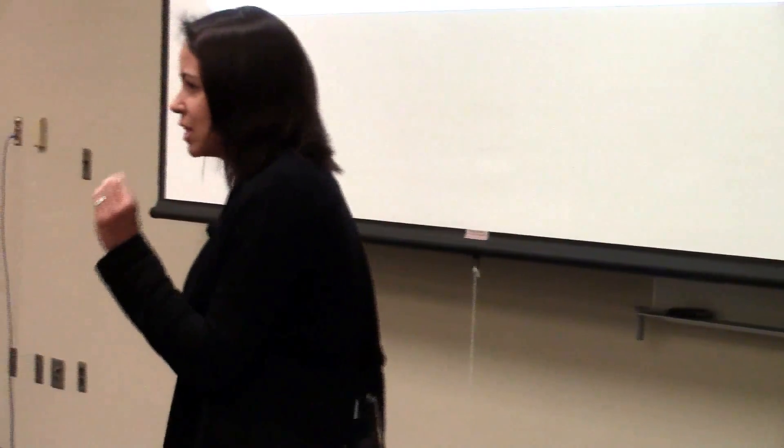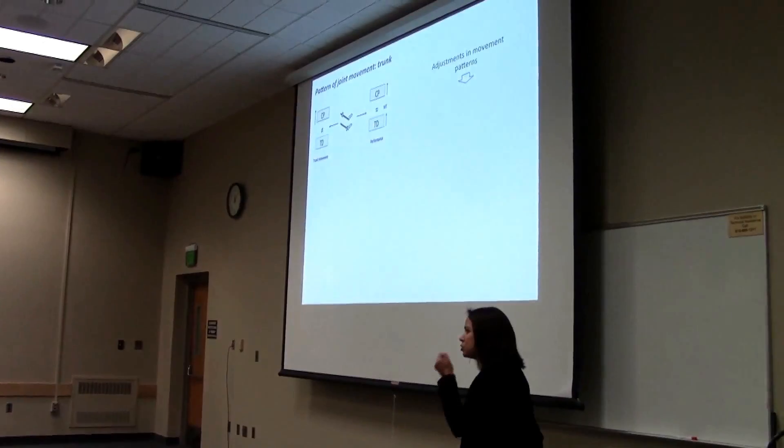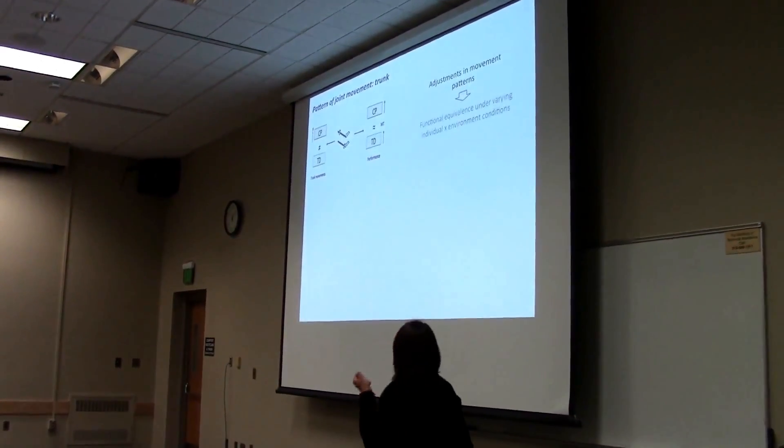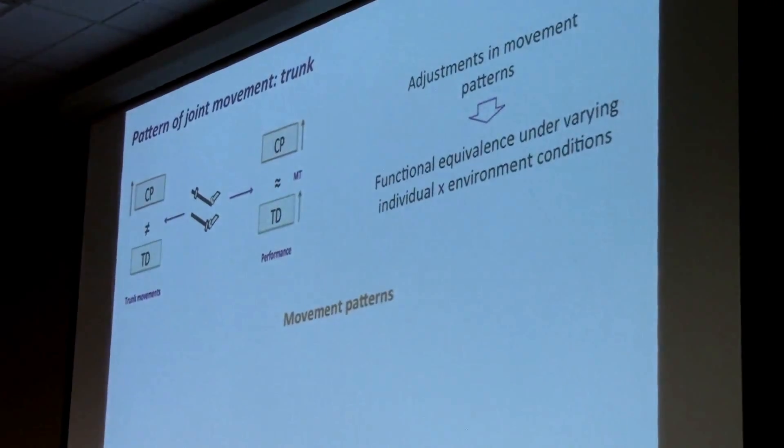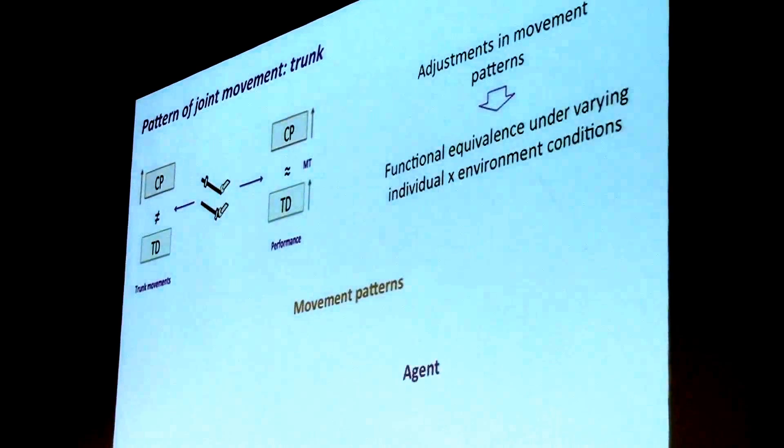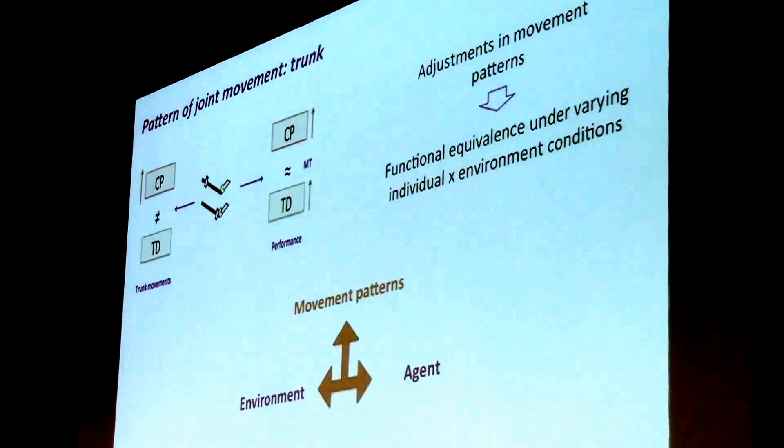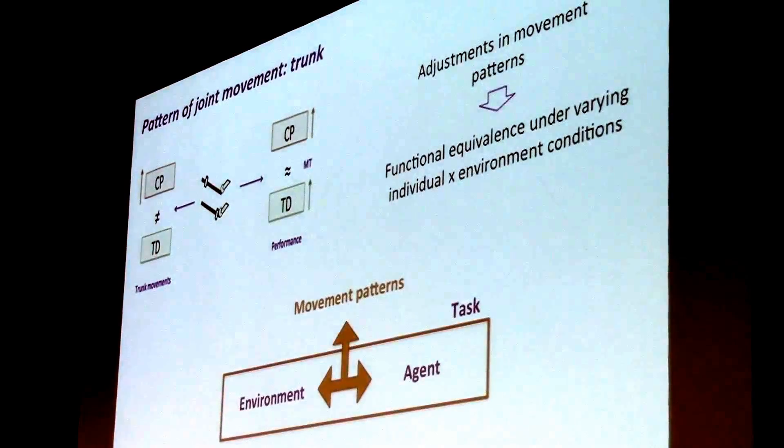So I want to exploit this a little more because I think there is a nice lesson here. You have differences in movement patterns that did not result in differences in performance. So what I think is that these adjustments in movement patterns are actually the required transformations for functional equivalence under different task conditions. I see movement patterns really as the transformations required to sustain agent-environment relations that are appropriate for task performance as the environment changes, as the individual changes.